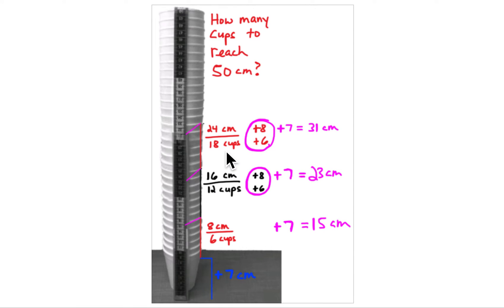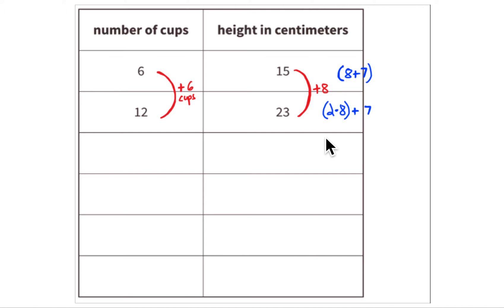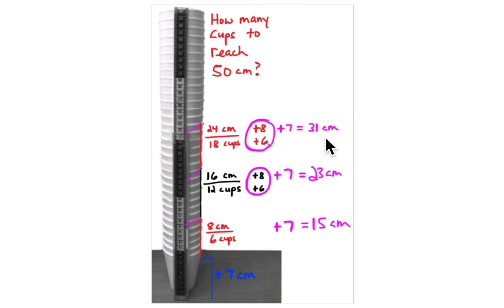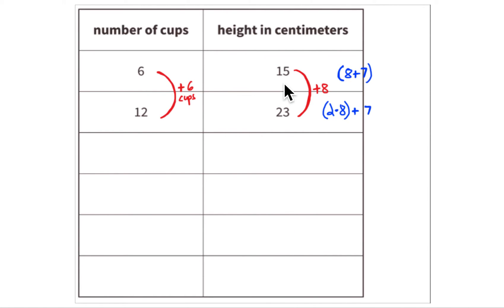We can start to build a table. Adding another six cups gets to 18 cups; eight more rim centimeters gives 24, plus seven equals 31 centimeters total. In the table, six cups is 15 centimeters — eight centimeters from the rims plus the seven centimeters from the first cup. The first cup plus the five remaining cups each add one and a third centimeters, so six cups gives eight centimeters of rims plus seven equals 15.